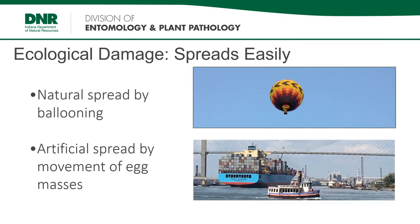Let's look at some of the qualities of Spongy Moth that make it so devastating. We've already talked about how caterpillars can ride on wind currents to find new feeding grounds. While natural ballooning may move caterpillars a few miles, artificial spread can take this insect across states, countries, or even across continents. This is due to the propensity for egg masses to be laid on objects moved by people, enabling spread into new areas, often undetected.